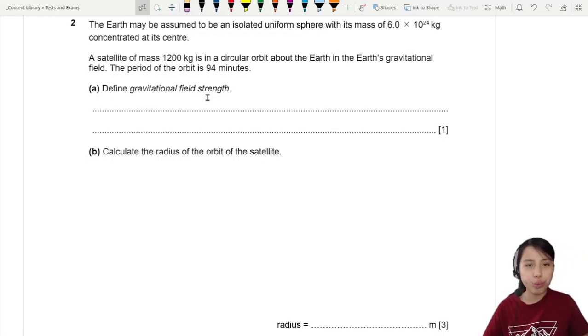The Earth may be assumed to be an isolated uniform sphere with a mass of 6 times 10 to the 24 kg concentrated at the center. A satellite of mass 1200 kg is in a circular orbit around the Earth in the Earth's gravitational field. The period of the orbit is 94 minutes.